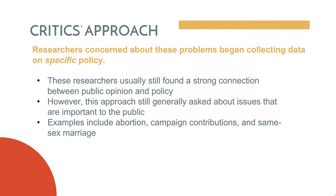Researchers remain concerned about problems with poll wording, so they began collecting data on more specific policy proposals. These researchers usually still found a strong connection between public opinion and policy. But it's still generally asking about issues that are very important to the public — we still have this potential sampling bias problem. Examples of research on this include abortion, campaign contributions, and same-sex marriage.